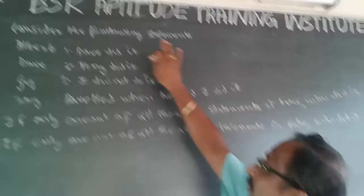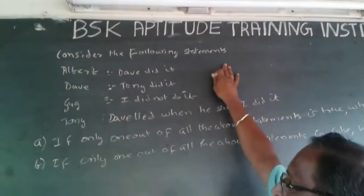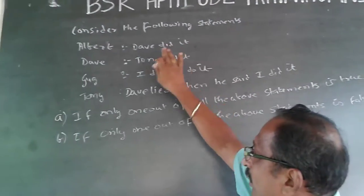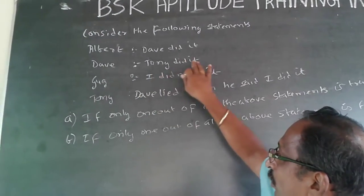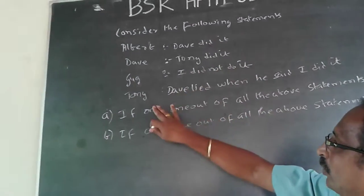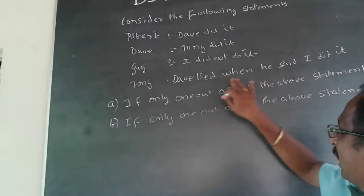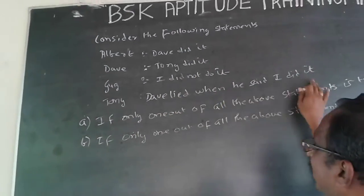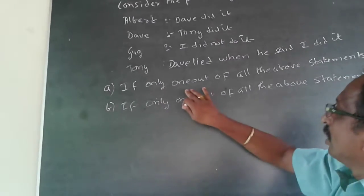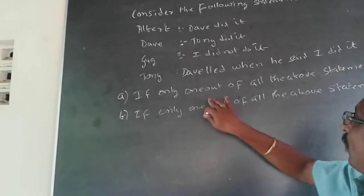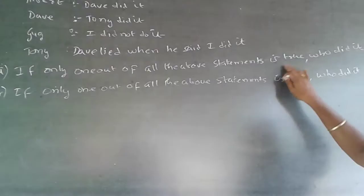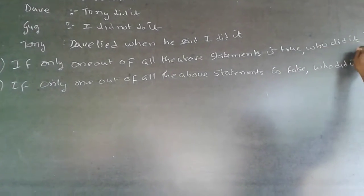The question is: consider the following statements. Albert says Dave did it. Dave says Tony did it. Gug says I did not do it. Tony says Dave lied when he said I did it. The condition is: if only one out of all the above statements is true, who did it?